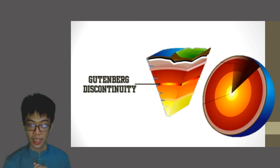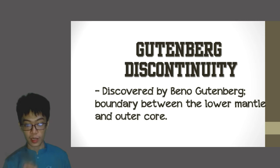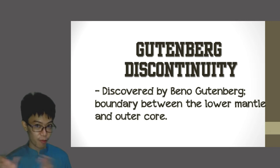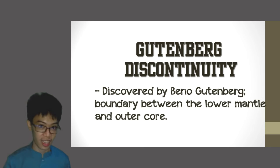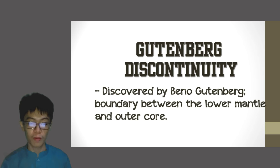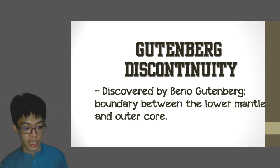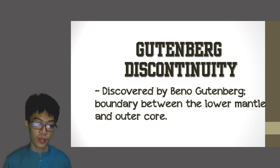Below the lower mantle, there is another boundary called the Gutenberg Discontinuity, discovered by Beno Gutenberg — different from Johann Gutenberg who discovered the printing press in the 1800s. Beno Gutenberg discovered the boundary between the mantle and the outer core.